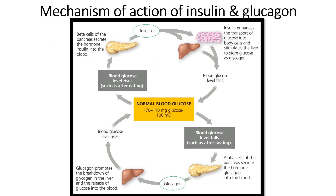Mechanism of action of insulin and glucagon: the normal blood glucose level is 70 to 100 milligrams of glucose per 100 ml of blood. If the blood glucose level falls, such as after fasting, it will cause the alpha cells of the islets of Langerhans to secrete glucagon into the blood. Glucagon then promotes the breakdown of glycogen in the liver and the release of glucose into the blood. This conversion of glycogen into glucose is referred to as glycogenolysis.